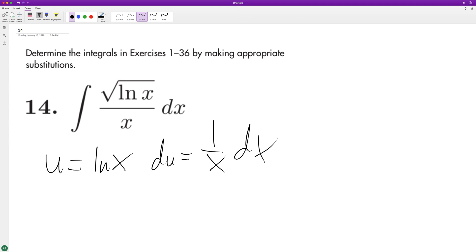What we have here is u raised to the one-half du, because our du is already in here. This is the same thing as one over x dx, so we can just leave that as is. That's pretty convenient actually.